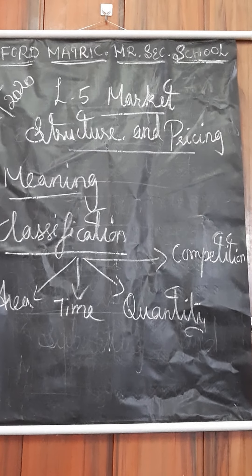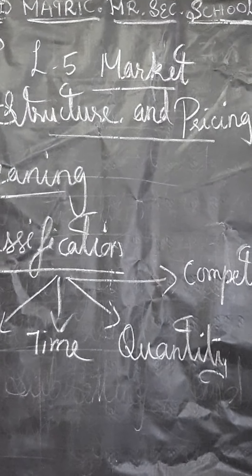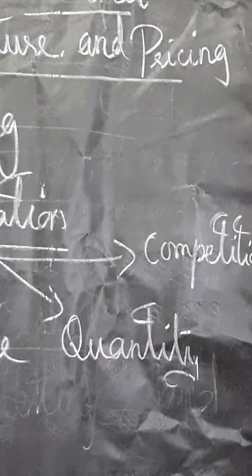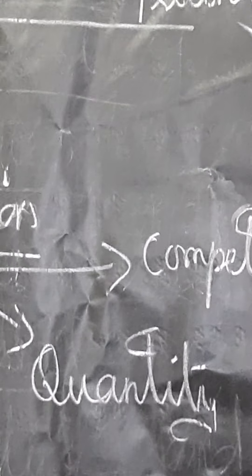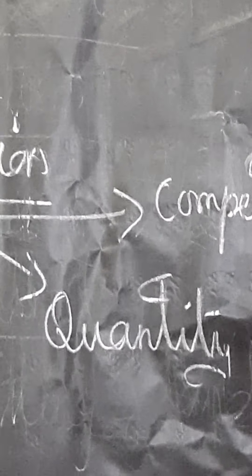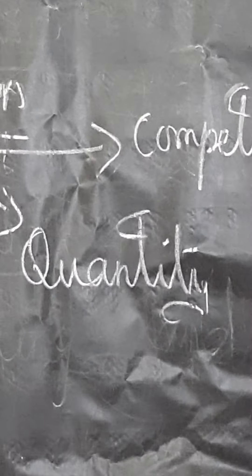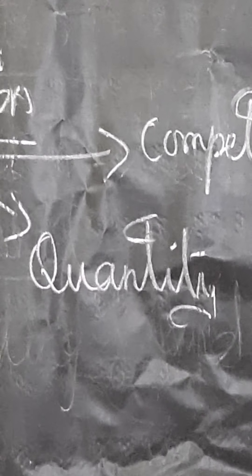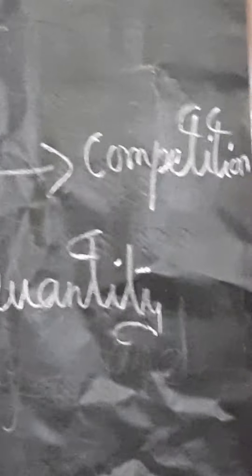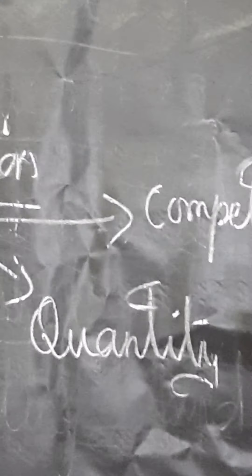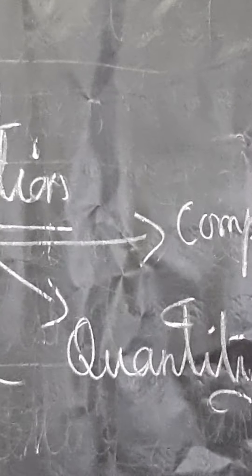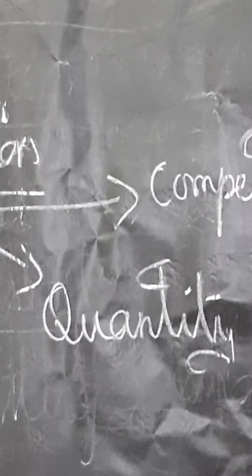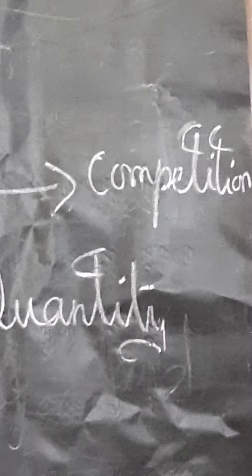On the basis of quantity of the commodity, we classify the market into wholesale market and retail market. Wholesale market is when we buy bulk goods — for example, groceries and dresses sold in bulk. The retailer buys the product from the wholesaler in bulk. Retail market involves selling or buying commodities only in small quantities — the retailer buys from the wholesaler and sells to the consumer.